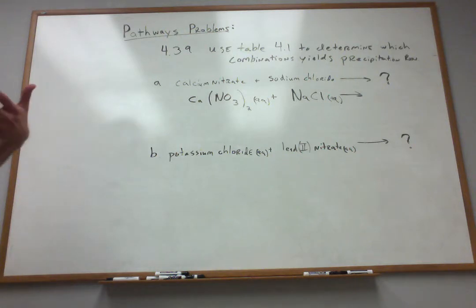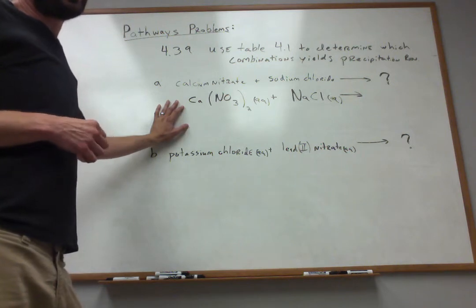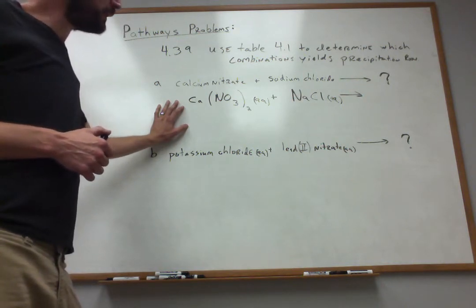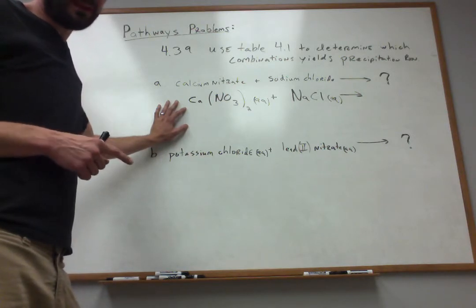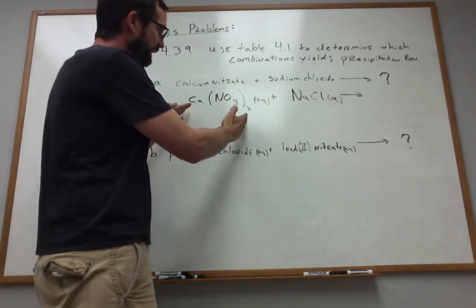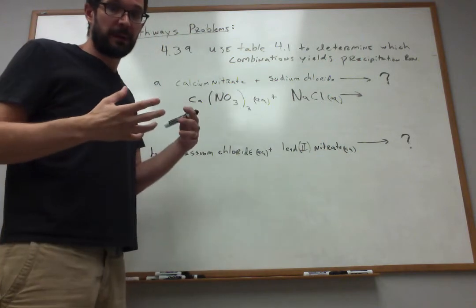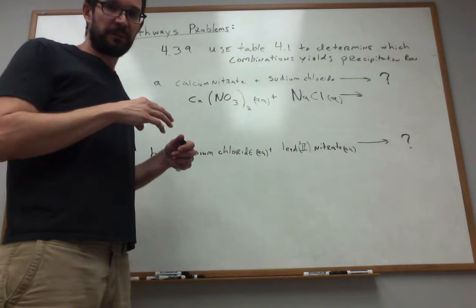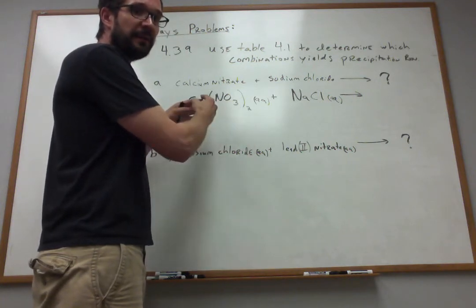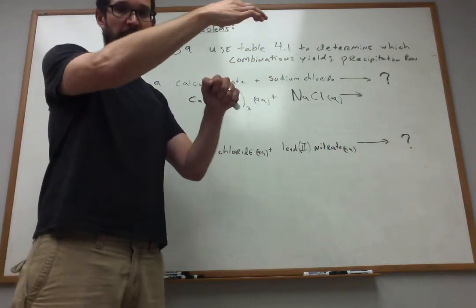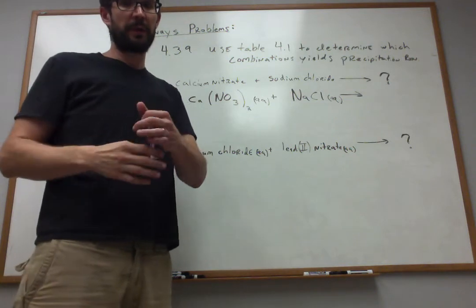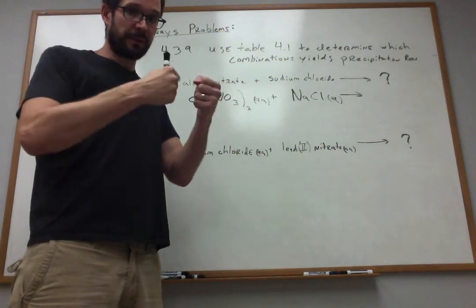Let's take a look at what's really going on here, because understanding precipitation reactions depends on understanding the aqueous phase. When we write a formula like Ca(NO₃)₂, we're inferring that the ions are paired up, as they are in a solid. But the situation changes when we put the material into water, because the ions physically separate when the salt dissolves. Instead, the ions become surrounded by water molecules — a Ca²⁺ surrounded by water molecules, a nitrate ion surrounded by water molecules — and they are no longer paired together.